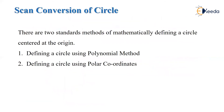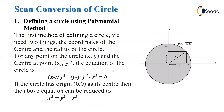The scan conversion of a circle can be mathematically defined using two methods: the polynomial method and the polar coordinate method. In the polynomial method, we need two things: the coordinate of the center and the radius of the circle. For any point (x, y) on the circle with center (xc, yc), we have the equation: (x - xc)² + (y - yc)² - r² = 0.